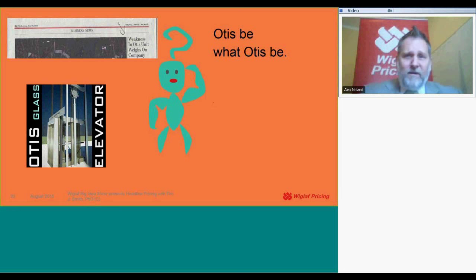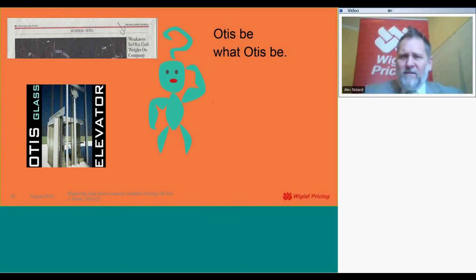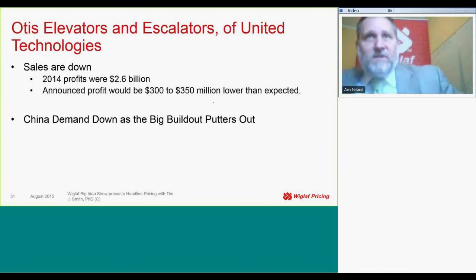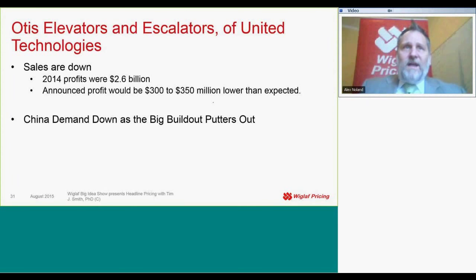Next up, Otis B with Otis B. Weakness in Otis unit weighs on company. Otis elevators and escalators is what I'm talking about. They're a part of United Technologies. Sales are down in 2015.